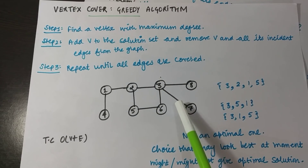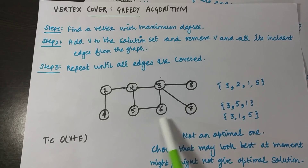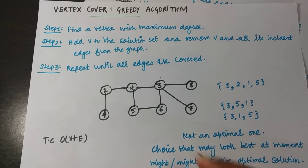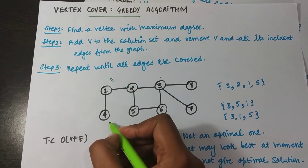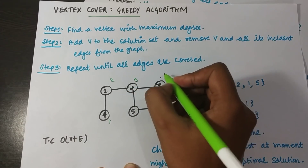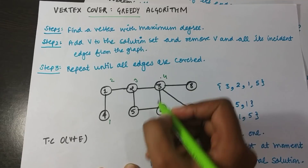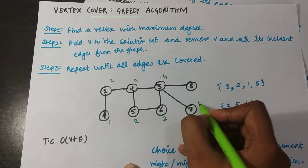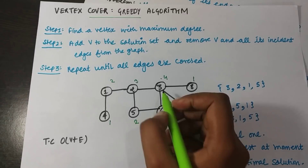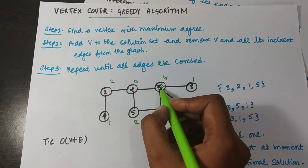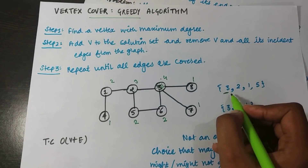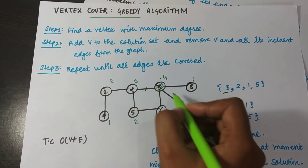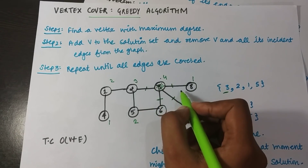In this graph, I first figure out the degree of each vertex. Vertex 1 has degree 2, vertex 4 has degree 1, vertex 2 has degree 3, vertex 3 has degree 4, vertex 5 has degree 2, vertex 6 has degree 2, and the remaining have degree 1. The maximum degree belongs to vertex 3, so I choose vertex 3 and add it to my solution set. All four edges associated with vertex 3 are then removed.